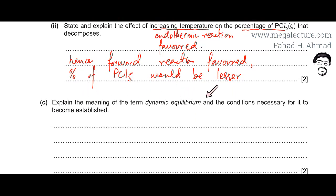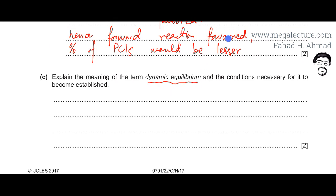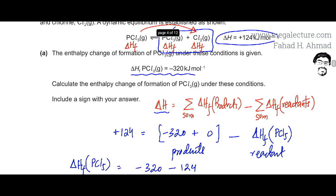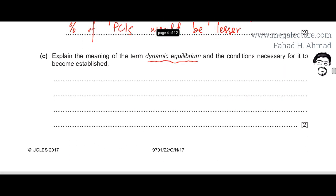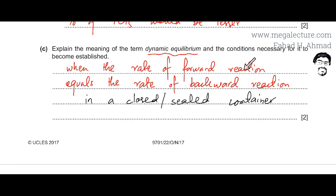Explain the meaning of the term dynamic equilibrium and the conditions necessary for it to become established. Dynamic equilibrium is when the rate of the forward reaction equals the rate of the backward reaction. The quantities of reactants and products could be different or the same, but the condition is that both rates are equal. The conditions necessary for it to be established are that the container must be sealed or closed — it must be a closed system with no changes in pressure, concentration, or other conditions introduced.